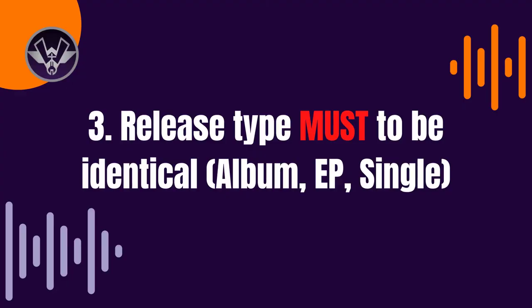The third thing you want to make sure is identical is the release type. If you had an EP before, it needs to be an EP again. If it was an album, it has to be an album. If it was a single, it has to be a single. Do not change the release type — otherwise it'll be registered as something new. You basically have to do everything identically the way you did it before, just with the new distribution.